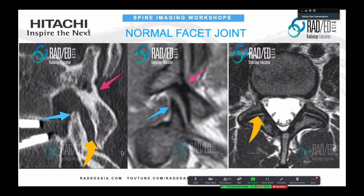If we look at the facet joint, it is basically composed of the joint between the inferior articular facet and the superior articular facet, with the joint space in between. On MRI, this is a PD sequence so we're seeing intermediate signal. On T1 you would see low signal, and on T2 you may see a thin amount of fluid in the facet joint or no fluid at all — that's the normal appearance.